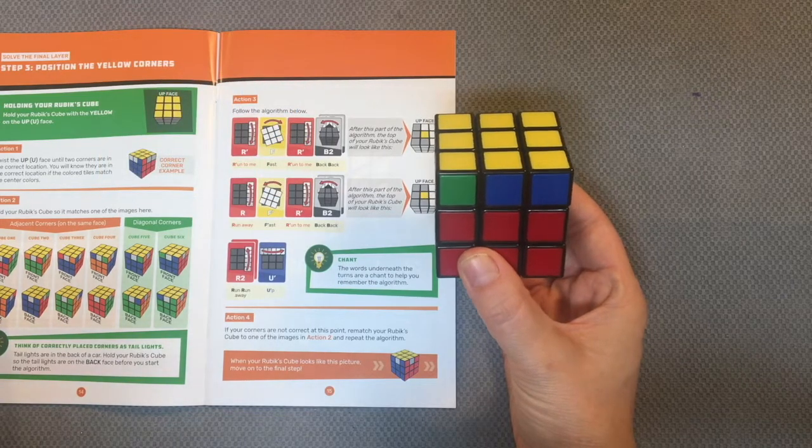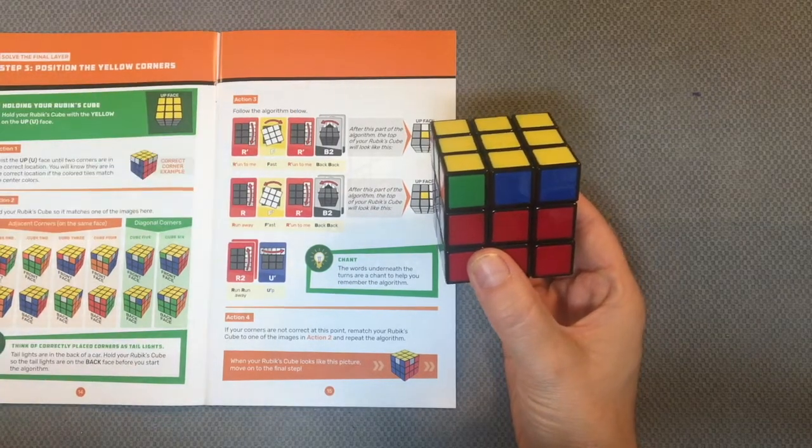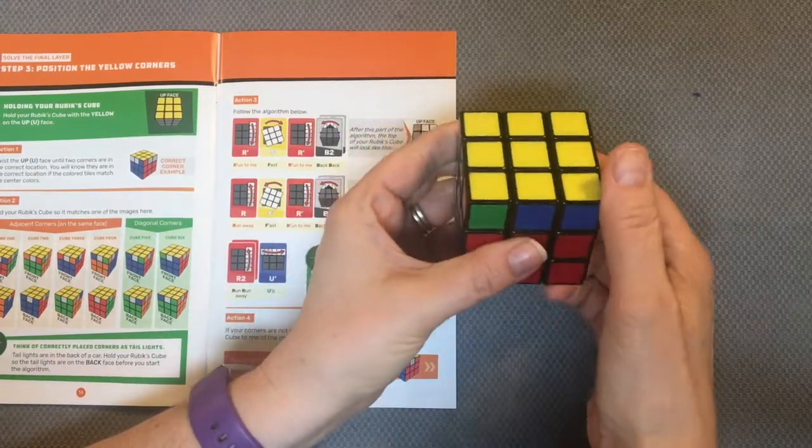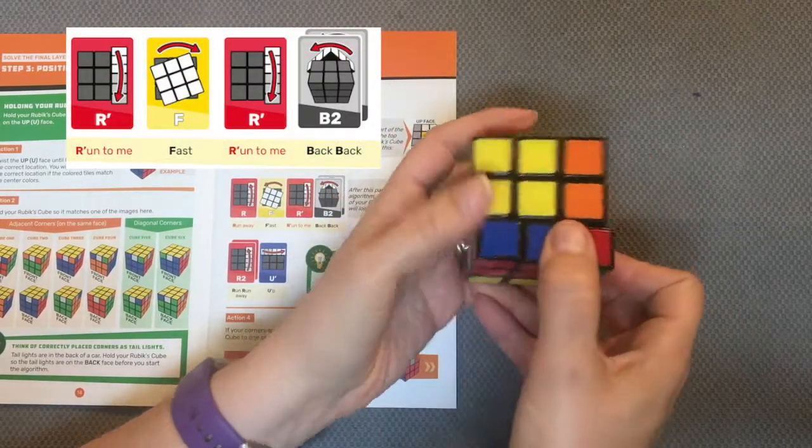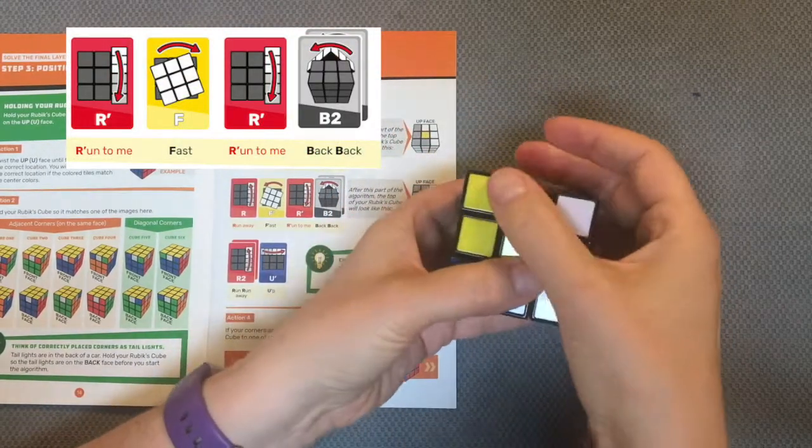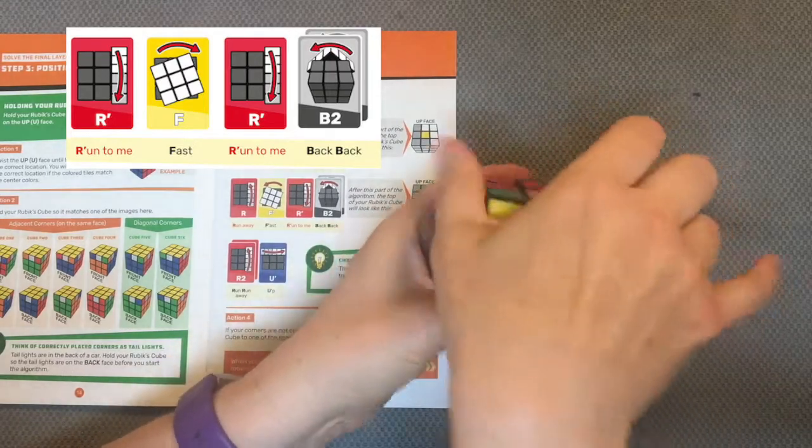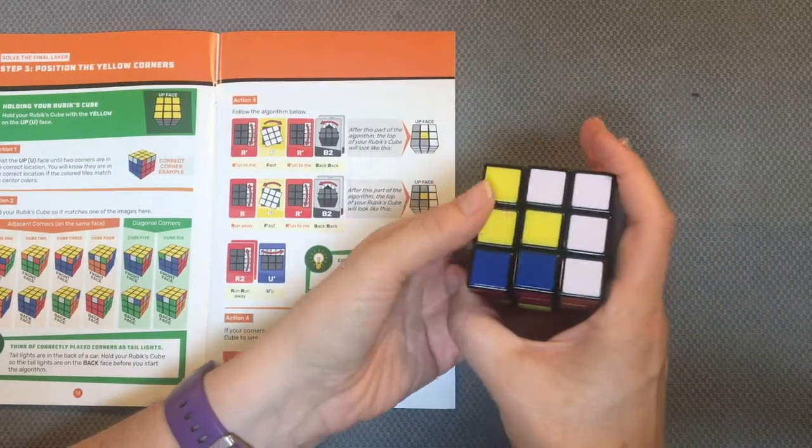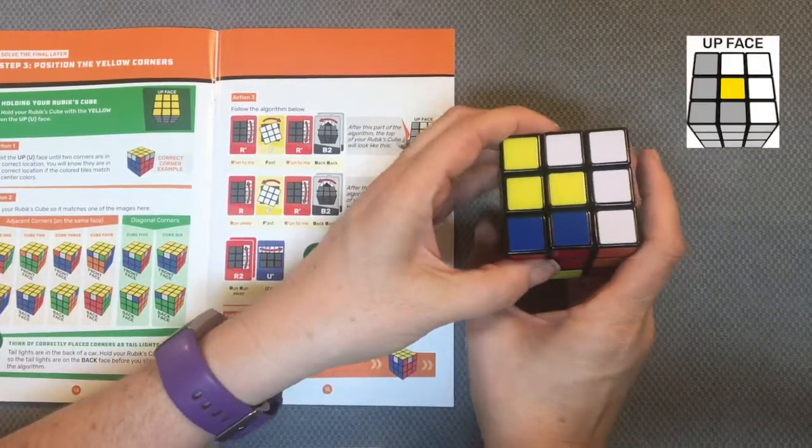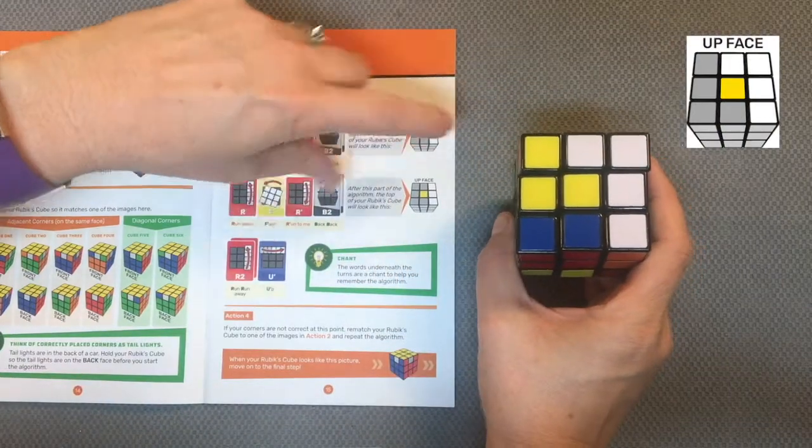Now I will move over to action three: right towards me, front to the right, right towards me, back twice. Notice I have this checkpoint where I have my yellow centerpiece.